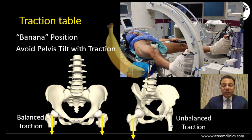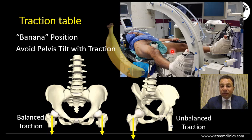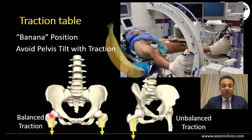Some hints about the traction table: usually we need the patient in what we name the 'banana position.' The second thing is that you should have balanced traction on both sides. If you do not apply traction to the sound limb, once you apply traction to the diseased limb the pelvis will tilt. So you have to apply traction to the sound side first, and then to the diseased side, so that the pelvis remains in the AP view and you can achieve a good AP view of both hips.